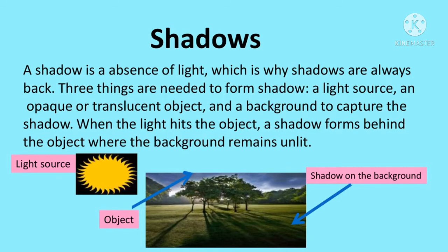Light travels in a straight line from its source. When it reaches an opaque solid object, the light is prevented from moving through the object, leaving an area of darkness on the other side — a shadow. If an object is transparent, the light can move through it. If the object is shiny, the light will be reflected. A shadow is made when an object blocks the path of a beam of light and creates a dark shape on a surface on the other side of the object.